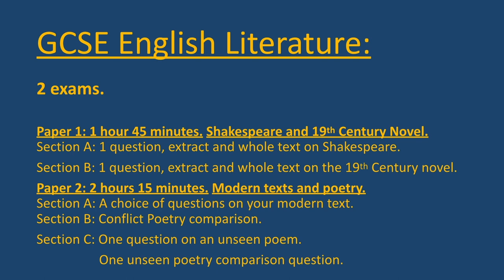For Paper Two, which is two hours and 15 minutes covering modern texts and poetry, Section A gives you a choice of questions on your modern text and you answer one. For Section B you answer the conflict poetry comparison question, and for Section C you answer one question on an unseen poem and one unseen poetry comparison question.